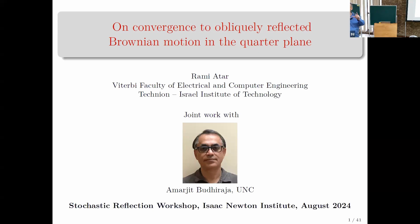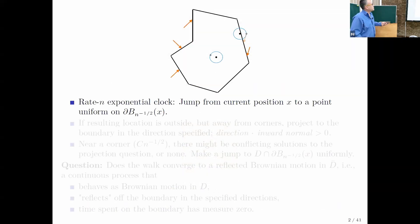It's a very simple setting — the geometry is just that of the quarter plane. You may ask yourself why I'm bothering you with such a simple setting, such a trivial problem, when there's so much literature on convergence to diffusions, to reflected diffusions. Let me start by describing a random walk constrained to a polyhedral domain.